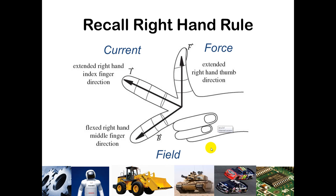You probably remember from physics or some of your other engineering classes that there is a right-hand rule when taking a cross product. If you were to pretend that your current vector was your index finger and your force vector is your thumb coming out, then your field vector is going to be your middle finger coming down. The force is perpendicular to the current and the field, and the current and the field are also perpendicular to one another. This helps you understand what direction your force will be applied when you have a current going through a motor in the presence of an electromagnetic field.